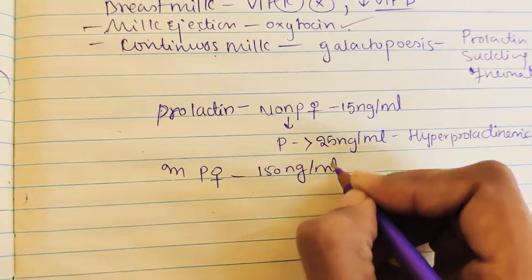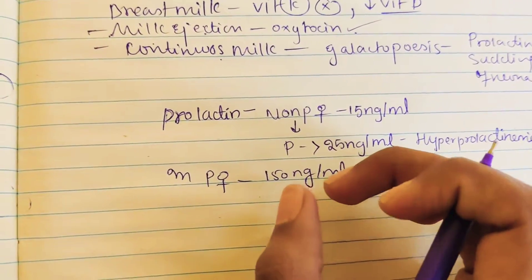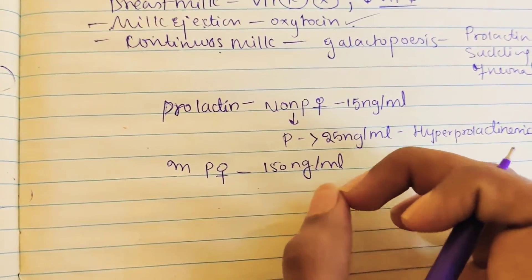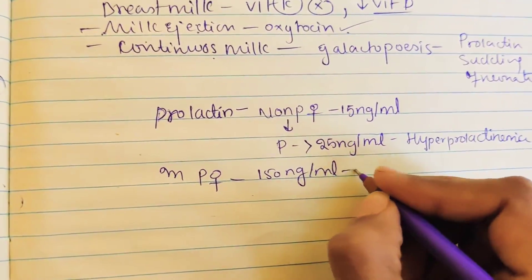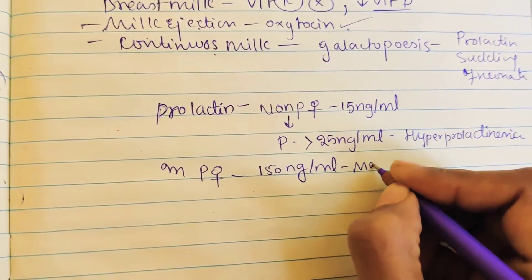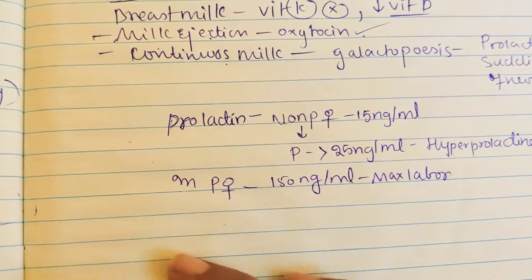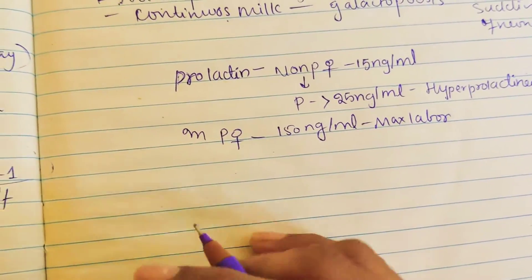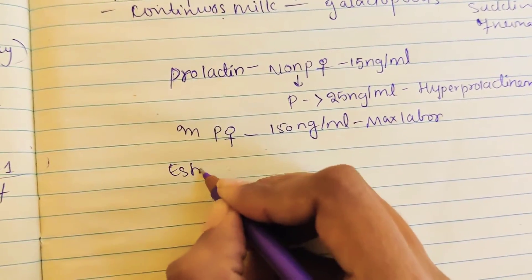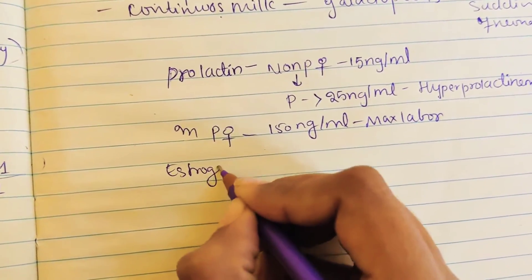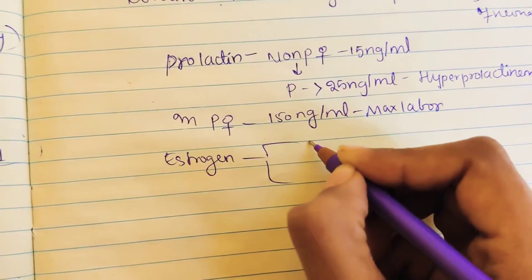In a pregnant female, the prolactin level is 150 nanogram per milliliter, and it is maximum especially at labor.